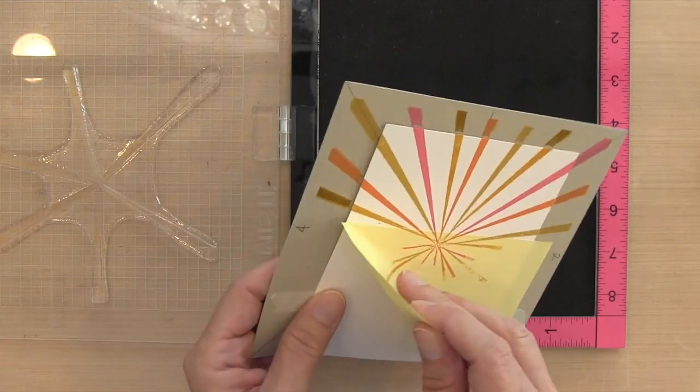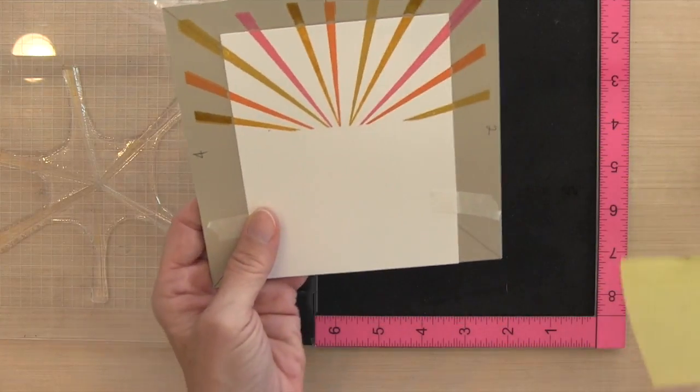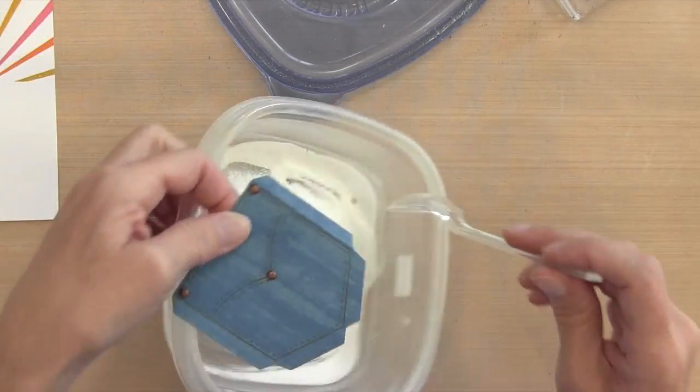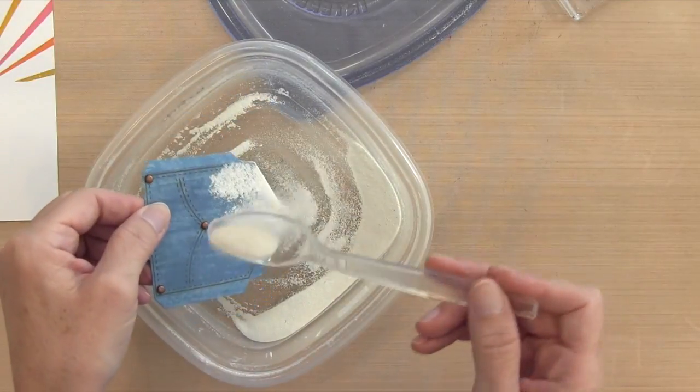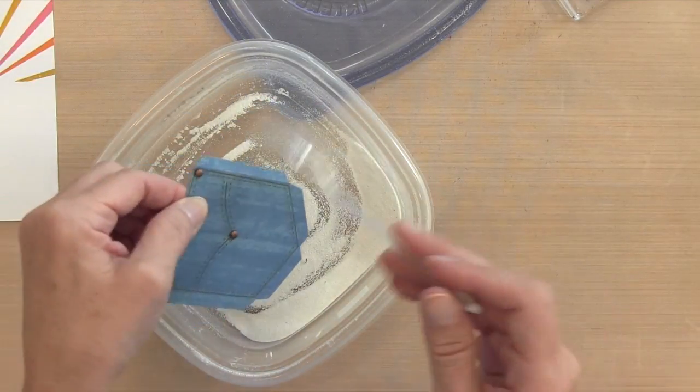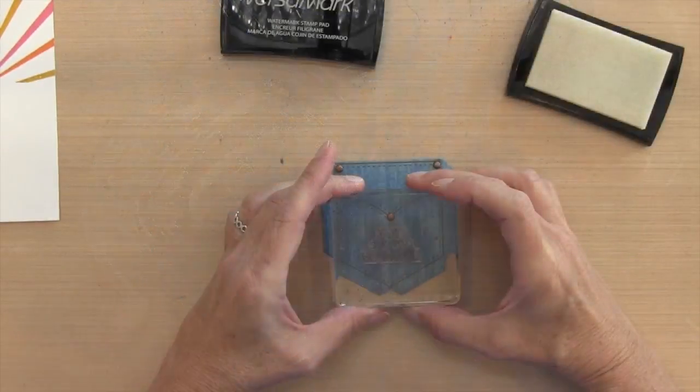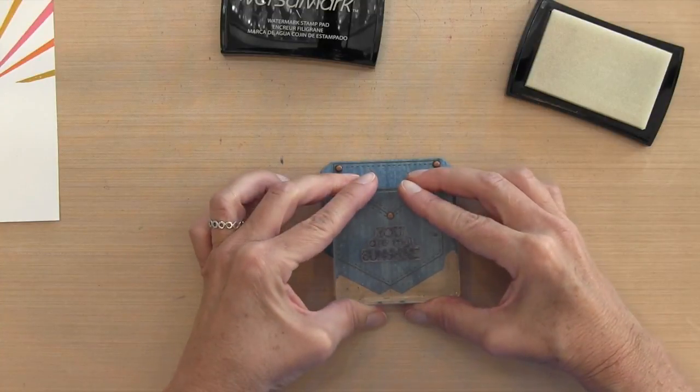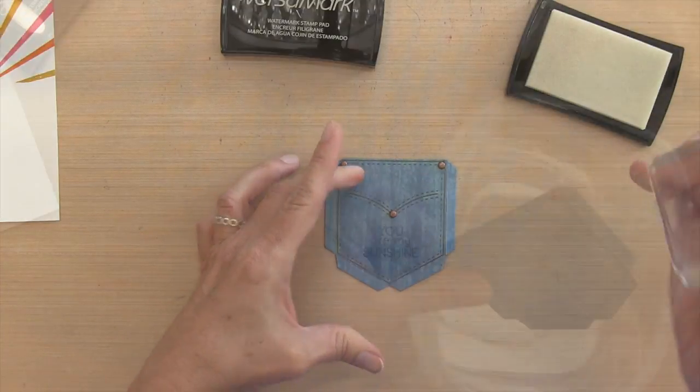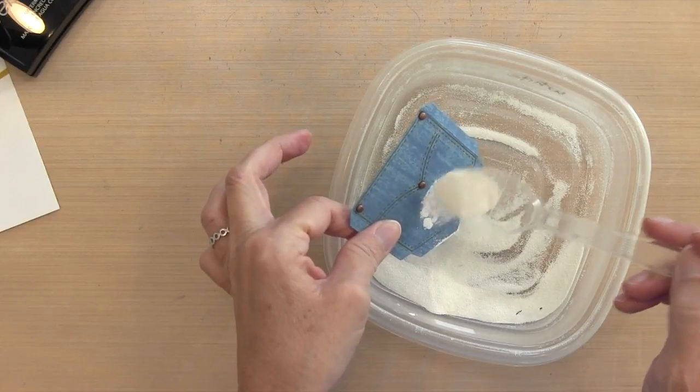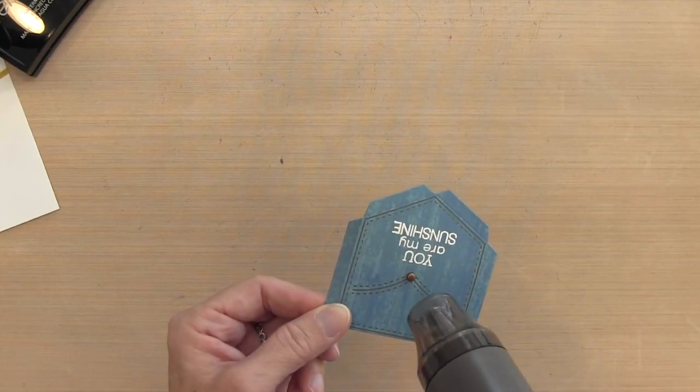And so I'm going to remove my post-it and you can see it's now going to look like my rays are coming out of the pocket. I'm going to see if my pocket is dry. So I'm going to put some embossing powder on there and nothing sticks. So it's ready. I'm going to stamp my sentiment with some Versamark ink and then I'm going to sprinkle it with white embossing powder. I use Hero Arts and then heat it to set it.